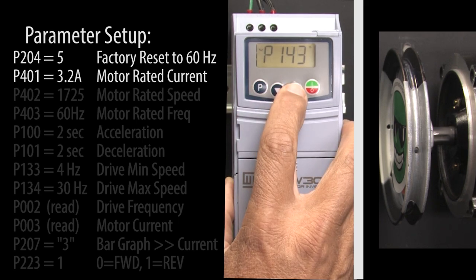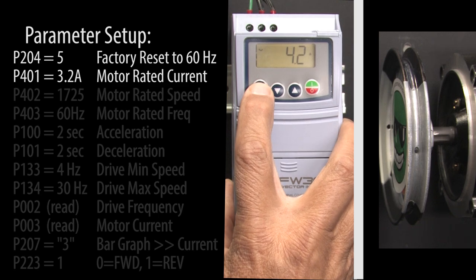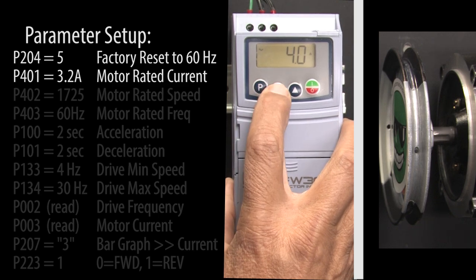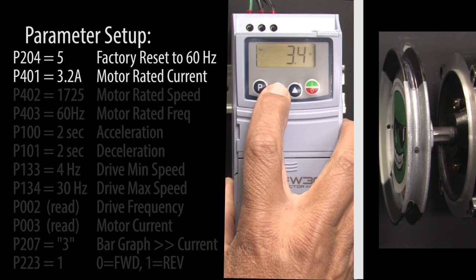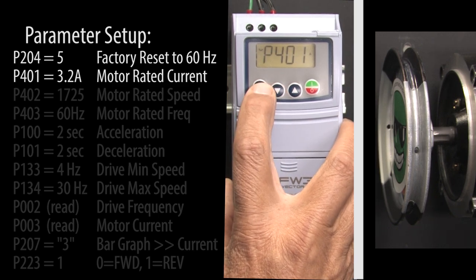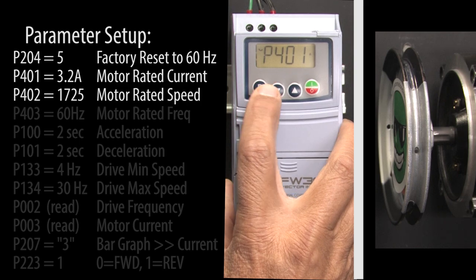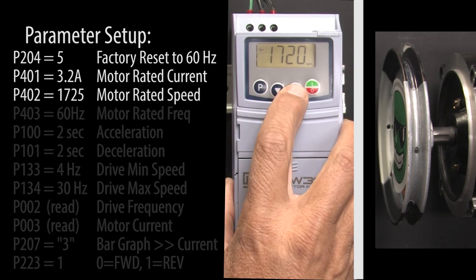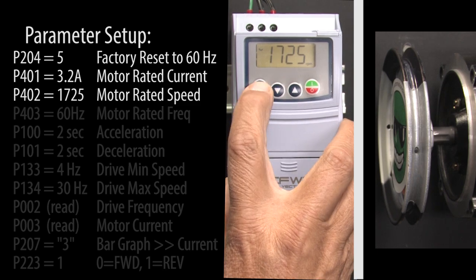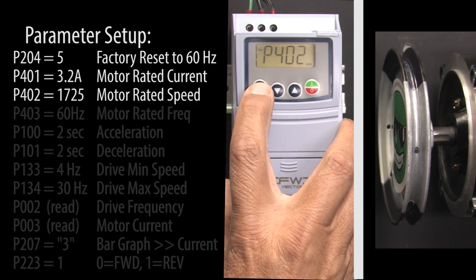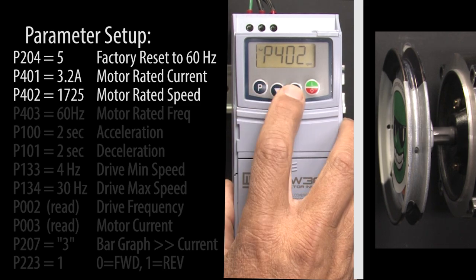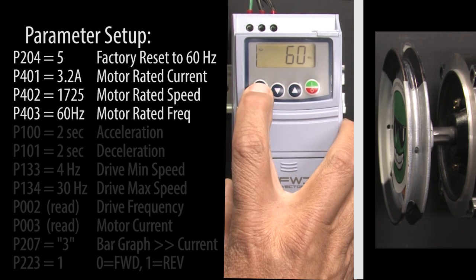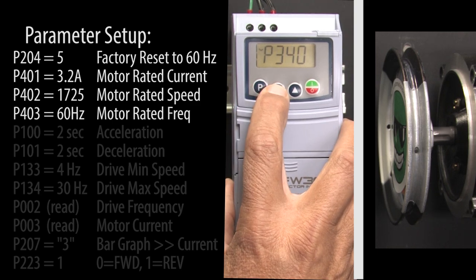Scroll to parameter 401, which is the motor's rated current. Ours is 3.2 amps, so we enter that and press P to accept it. Parameter 402 is the motor's rated speed — we'll modify that to 1725 and hit P to accept that. Parameter 403 is the motor's max frequency; 60 Hz is what we want, so hit P to accept that.